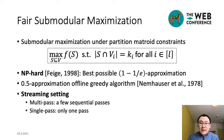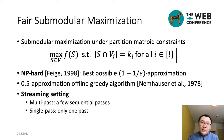The fair submodular maximization problem is NP-hard and cannot be approximated within a factor of 1 minus 1 over e, unless P equals NP. Nevertheless, an offline greedy algorithm achieves a 0.5 approximation for this problem, but it cannot be used in the streaming setting. In this work, we propose efficient algorithms for the fair submodular maximization problem in both the multi-path and single-path streaming settings.